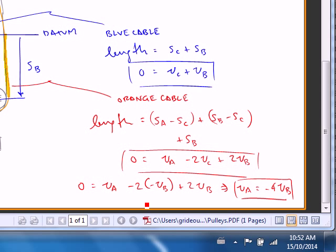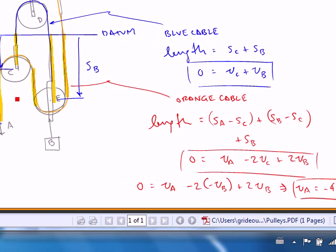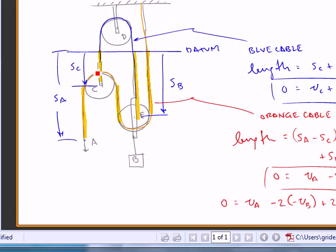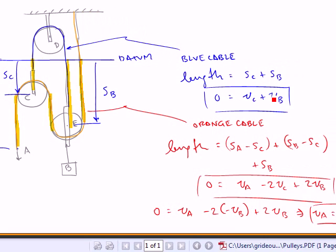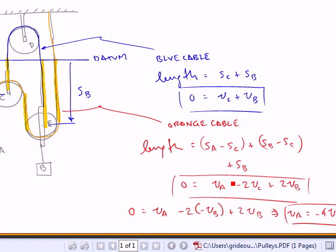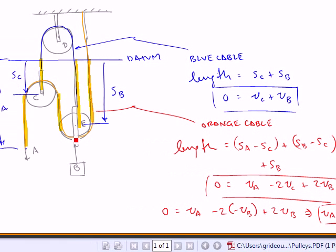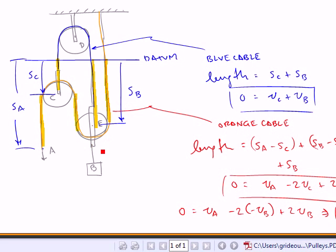So in this problem, we had two separate cables. And we had to express the length of each cable in terms of the position coordinates. And we basically had to use one equation, substitute it into the other, to relate the two specific coordinates, SA and SB. That would be of interest in this problem. I hope this clears it up a little bit and this document will be posted. Thank you. Good night.